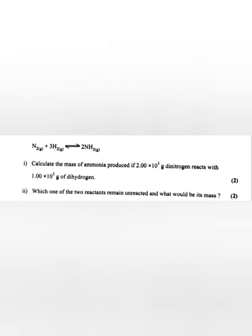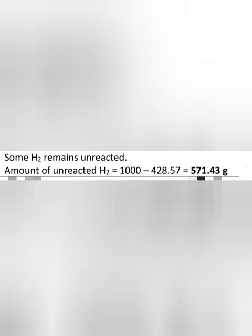Which one of the two reactants remains unreacted and what would be its mass? Answer: Some H2 remains unreacted. Amount of unreacted H2 is equal to 1000 minus 428.57, so the answer is 571.43 grams.